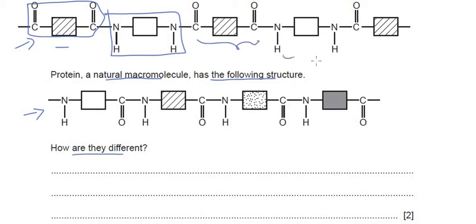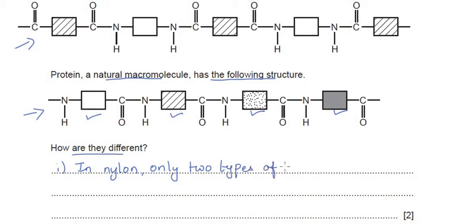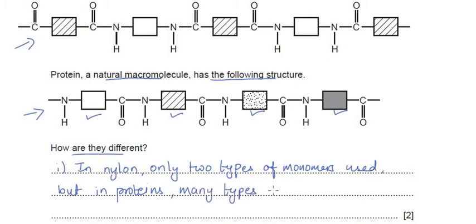In nylon, the same two monomers repeat every time. In proteins, every monomer is different — many types of monomers are used. We know that proteins are made of amino acids and we have 20 such amino acids which can be used in any sequence. So the first difference: nylon uses only two types of monomers, but proteins use many types.